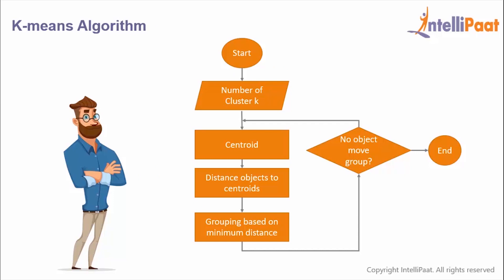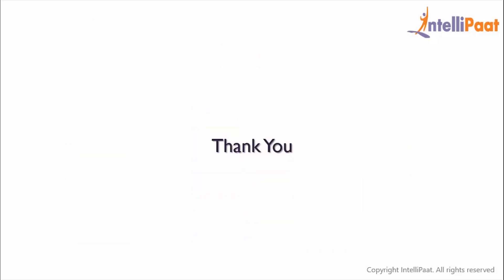Now let me summarize the algorithm for you. Initially we need to find the number of clusters and centroid for a given data set. Then we identify the distance from the centroid and group them based on the minimum distance. We repeat this step until we get the fixed centroid. So guys, this is all about the k-means algorithm. This brings us to the end of the session. Thanks for attending and let's meet in the next class.